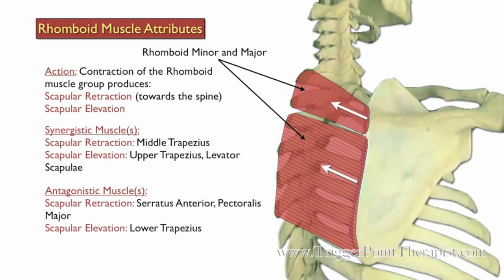The serratus anterior and pectoralis major oppose the rhomboids during scapular elevation. The lower trapezius also opposes the rhomboids during scapular elevation.